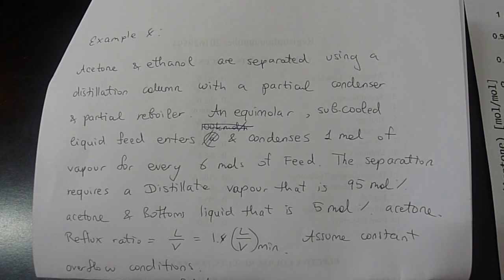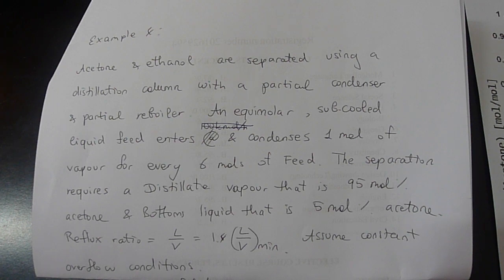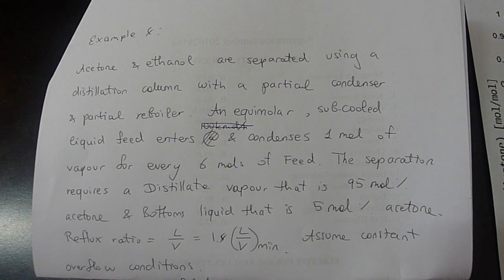Example 4 concerns an acetone and ethanol mixture going through a distillation column. Acetone and ethanol are separated using a distillation column with a partial condenser and a partial reboiler. An equimolar subcooled liquid feed enters and condenses 1 mol of vapor for every 6 mol of feed. The separation requires a distillate vapor that is 95 mol percent acetone and a bottoms liquid that is 5 mol percent acetone.